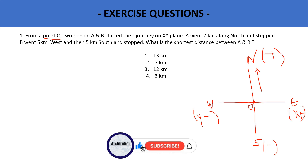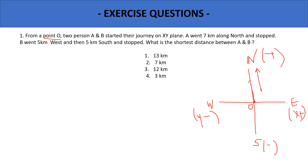A went seven kilometers to the north, so A is at position (0, 7). Then B went five kilometers to the west, which is minus five, and then five kilometers south, which is also a negative value. So B is at position (−5, −5). Now we have to find the shortest distance between A and B.